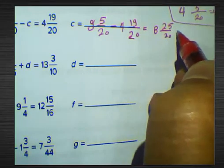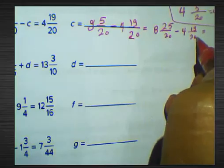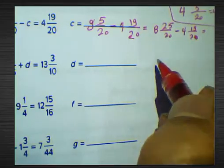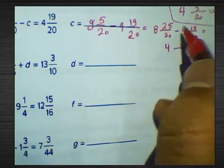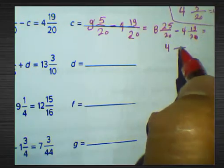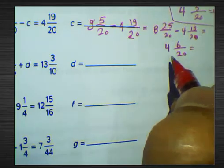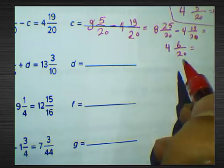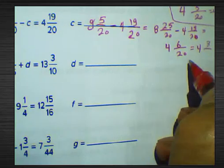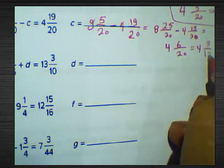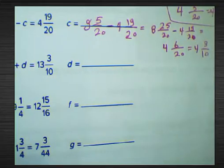Now: 8 and 25 over 20 subtract by 4 and 19 over 20. Find the difference: 8 minus 4 equals 4, and 25 minus 19 equals 6 over 20. Simplify by dividing by 2: 6 divided by 2 equals 3, and 20 divided by 2 equals 10. The result is 4 and 3 over 10.